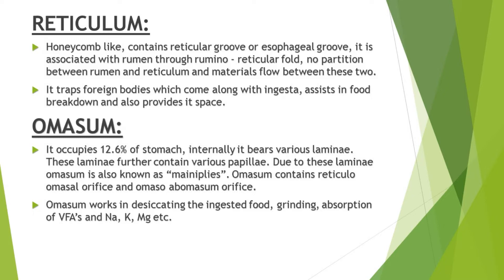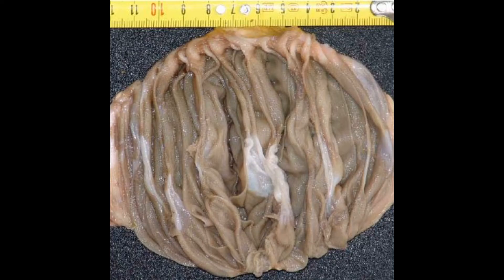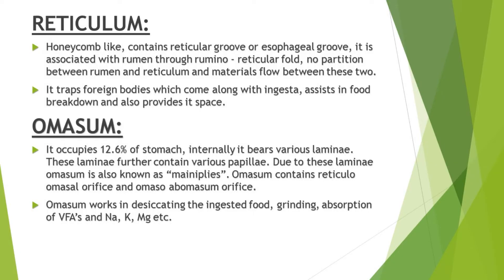The next compartment is the omasum, which occupies 12.6 percent of the total compound stomach and internally bears various laminae. These laminae further contain various papillae, and due to these laminae the omasum is known as many plies. The omasum contains the reticulo-omasal orifice and the omaso-abomasal orifice, allowing passage of materials between compartments. The major function of omasum is to absorb maximum water from the ingesta, thus desiccating the ingested food. Other functions include grinding of food and absorption of VFAs, volatile fatty acids, and sodium, potassium, magnesium, and so on.